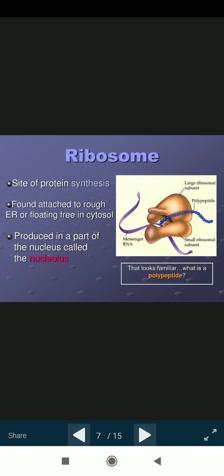The ribosomes are the protein synthesis found attached with the endoplasmic reticulum, floating free in cytosol, produced in part of the nucleus called the nucleolus. Messenger RNA, large ribosomal subunits, polypeptide, and small ribosomal subunits are found along with the ribosomes.